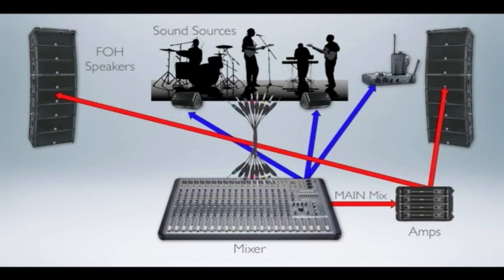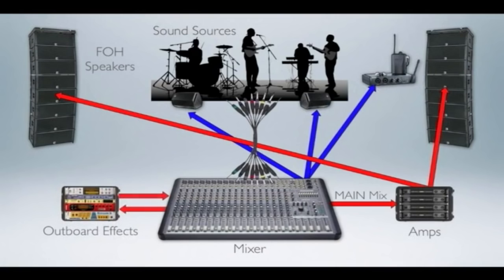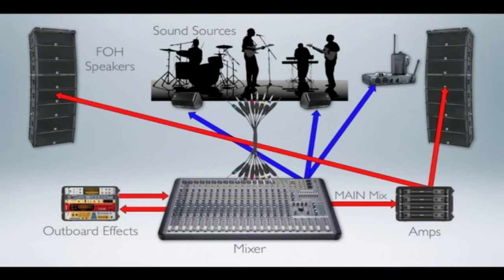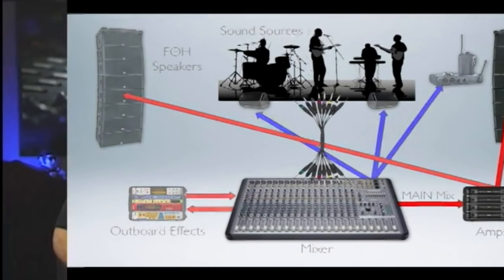A portion of that signal could also go out to an effect unit. Don't forget that an input may have an insert effect placed in line with that channel too. That seems like a lot of stuff going from piece to piece, but studying that diagram will help you understand that signal flows from one device to the next. Once that's rock solid in your mind, troubleshooting really becomes second nature.